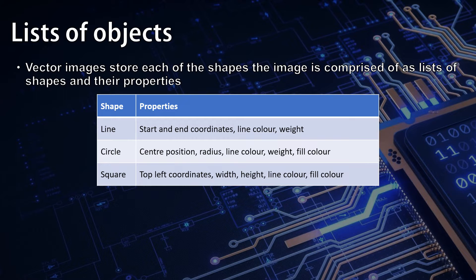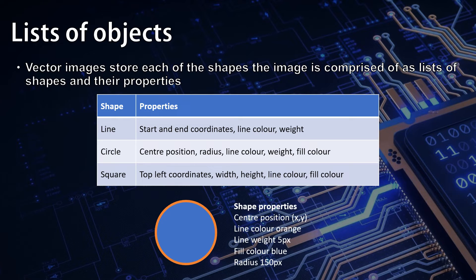A square might need to know the top left coordinates both x and y, the width, the height, the line colour, the fill colour, and probably the weight of that line as well. So for this example circle here, we would need to know the centre position so we know where to place it, that the line colour is orange, that the line weight is 5 pixels, that the fill colour is blue, and that the radius is 150 pixels. With this information, it can be redrawn. It can also easily be scaled.